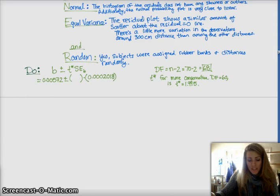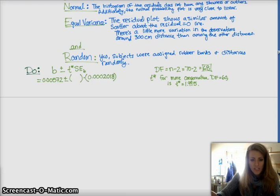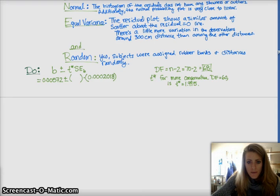Alright, so when you go to the table, you'll find that there isn't a degrees of freedom 68. You have to be a little more conservative, so you would round down to 60. You can't say your sample size is larger than it actually is. So, we get T-star to be 1.995, and then we'll plug that in and find our confidence interval.